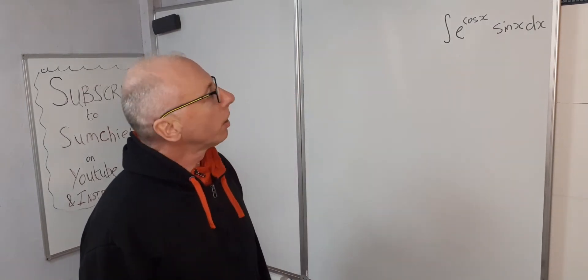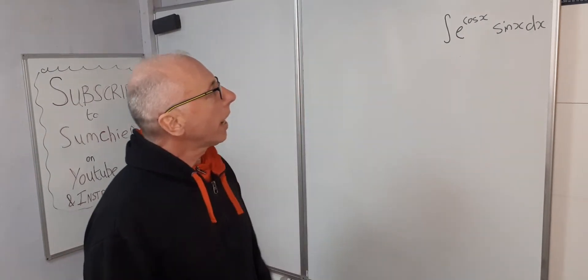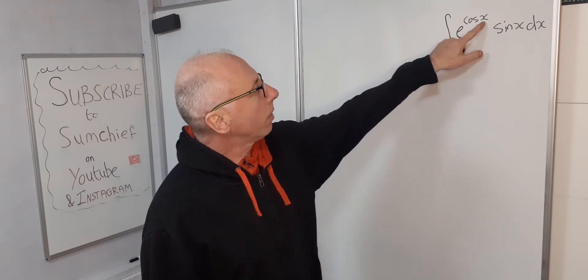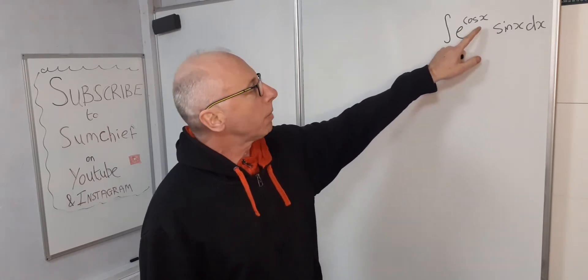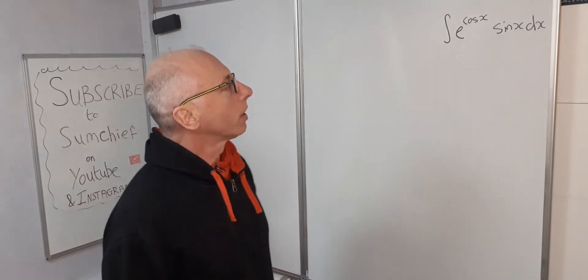Another option we've got, we can see we've got a cosine x and a sine x, and as the cosine x is the power of the exponential, maybe we should do a u sub for the cosine x because cosine and sine go well together.